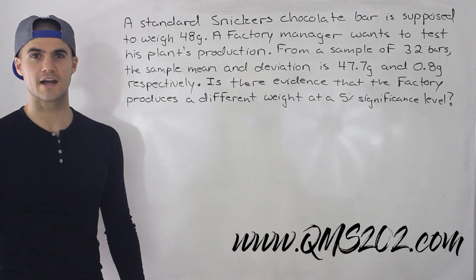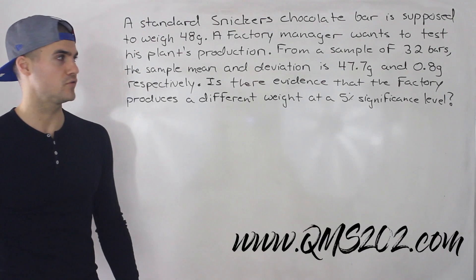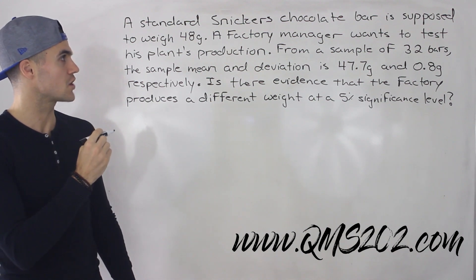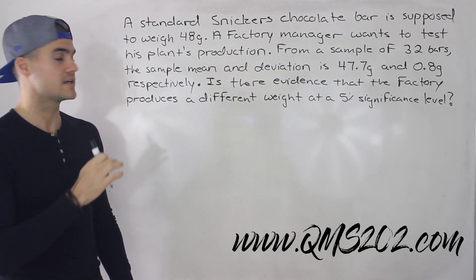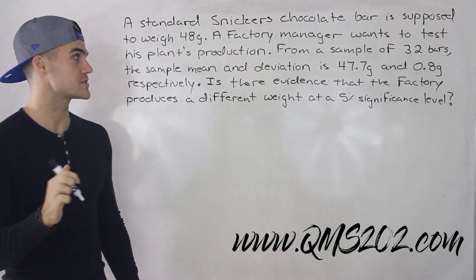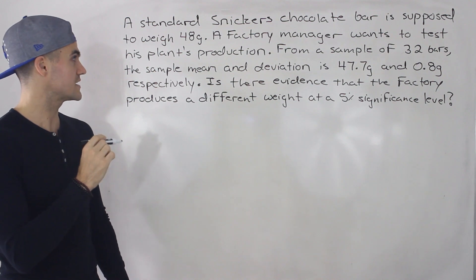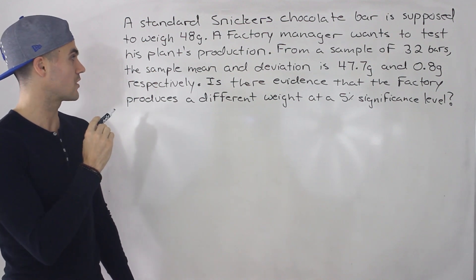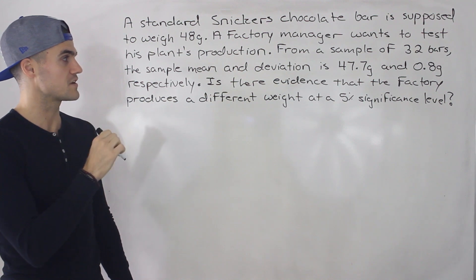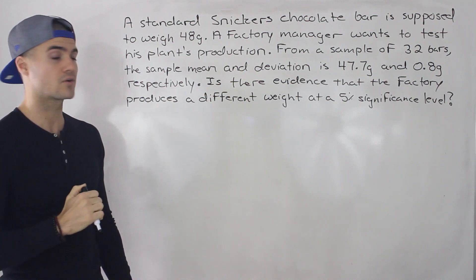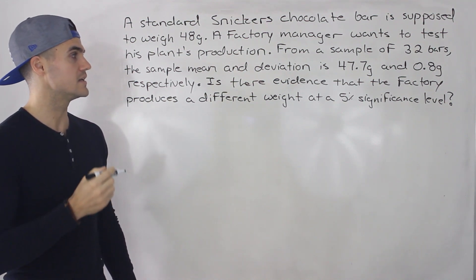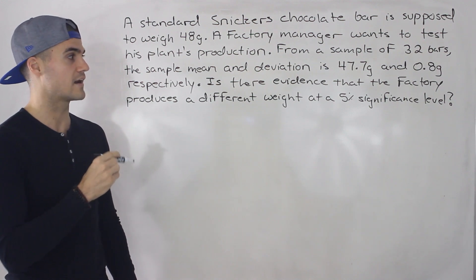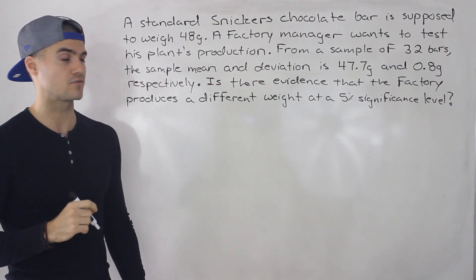Welcome back. Patrick here, moving on to another example with hypothesis testing. A standard Snickers chocolate bar is supposed to weigh 48 grams. A factory manager wants to test his plant's production. From a sample of 32 bars, the sample mean and deviation is 47.7 grams and 0.8 grams respectively. Is there evidence that the factory produces a different weight at a 5% significance level?